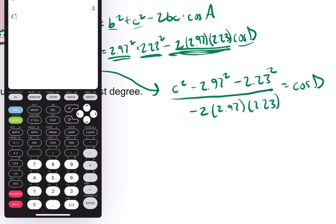Alpha C. That's C squared. Minus 2.97 squared. Minus 2.23 squared. Boom. That's our numerator. Then divide it by negative 2 times 2.97 times 2.23. Boom. The cosine of D is that value.